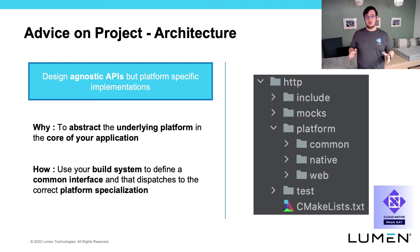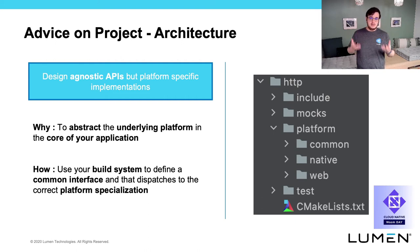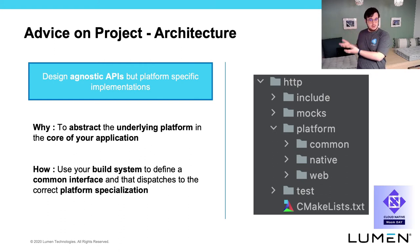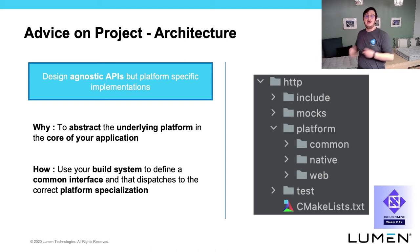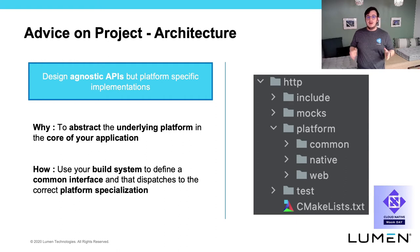Here is an example from our codebase. This is the module that handles everything related to HTTP calls. Our agnostic interface has exposed headers in the include directory. We have the common code in the common directory, and one directory for the native platform such as Android and iOS, and one directory for the web platform. When compiling to Wasm, our build system automatically selects the web folder to build sources.